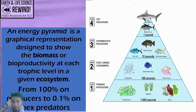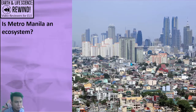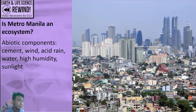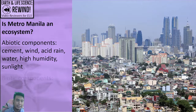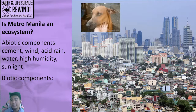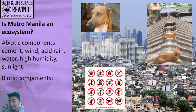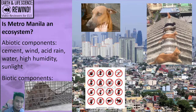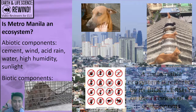A quick application: is Metro Manila an ecosystem? Yes, it is, because it has abiotic components like cement, wind, acid rain, water, high humidity, and sunlight. It also has biotic components — organisms like dogs, cats, pests, insects, and rats. But the question is, is it a sustainable ecosystem?